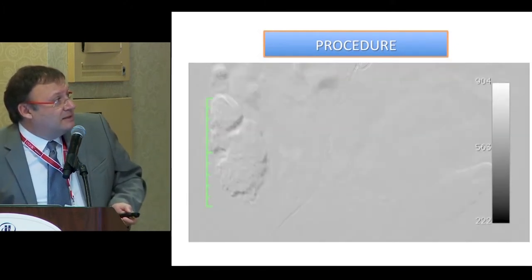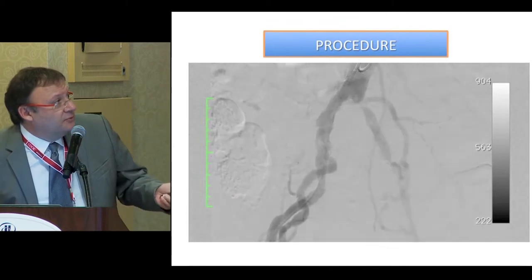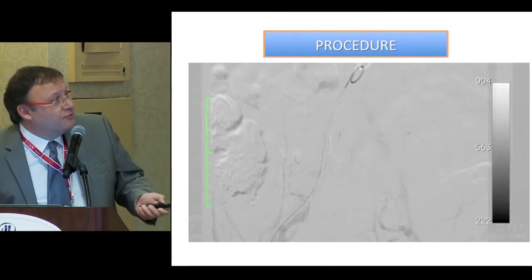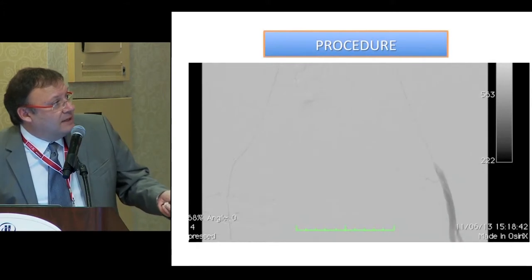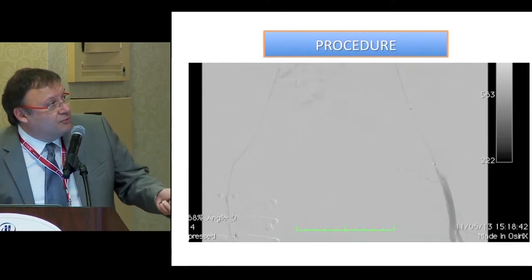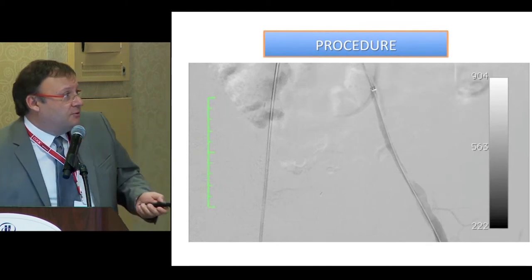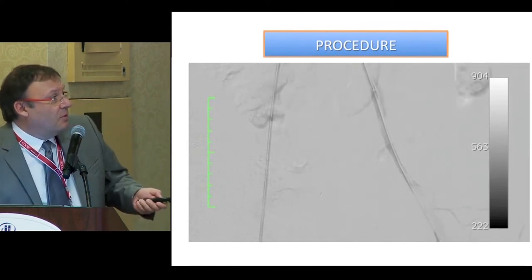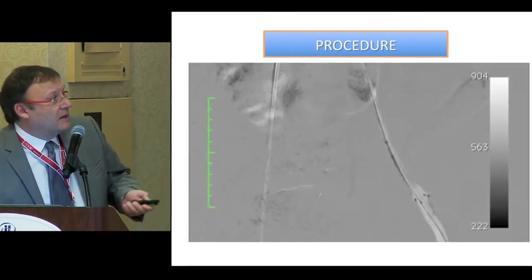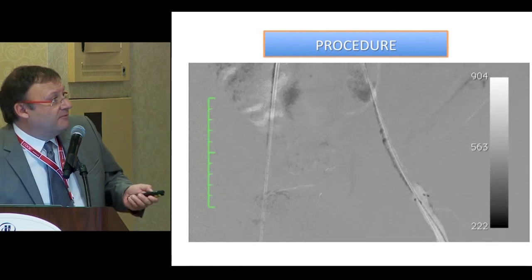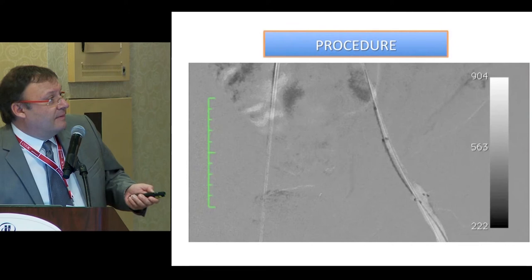We got enough support to bend the sheath and to pass through the occlusion with the wire and to advance further with the sheath into the occlusion. We then had to remodel the entire external iliac that we had dissected before, with two stents.